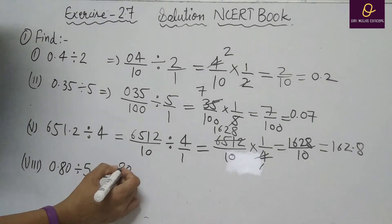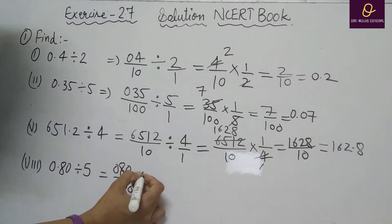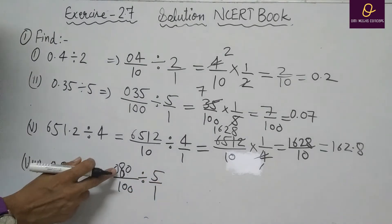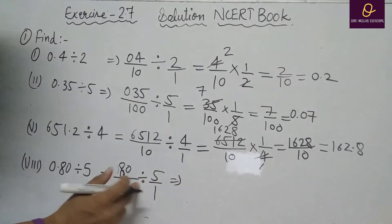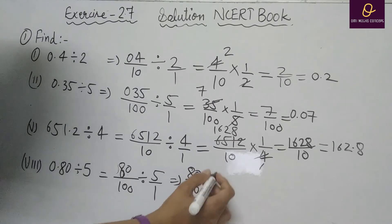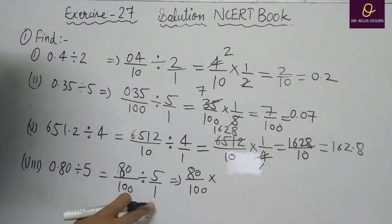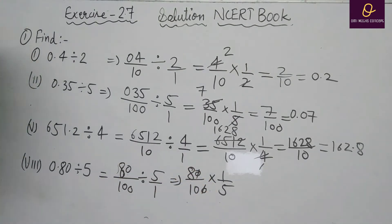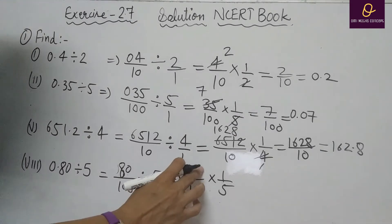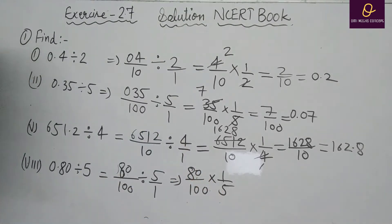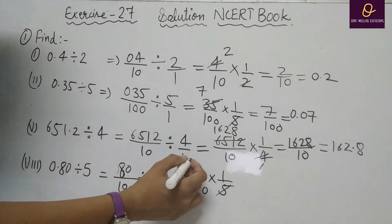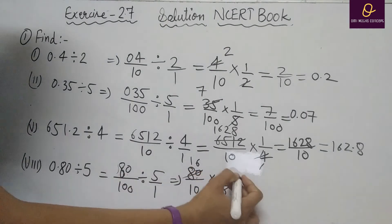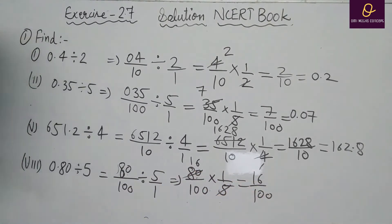Part 8: 0.80 divided by 5. Remove decimal: 80 divided by 100, divided by 5 by 1. Note that the zero here has no value. Divide changes to multiply and reciprocal of 5 by 1 is 1 by 5. Cancel 5 with 80 (not the zeros from 100). We get 16 by 100. Put decimal after 2 digits: answer is 0.16.